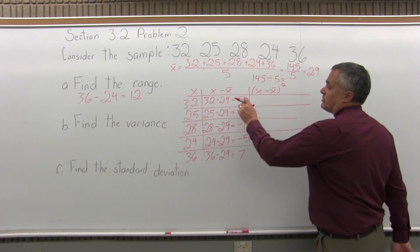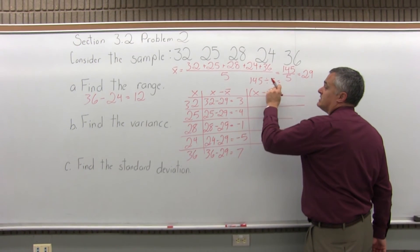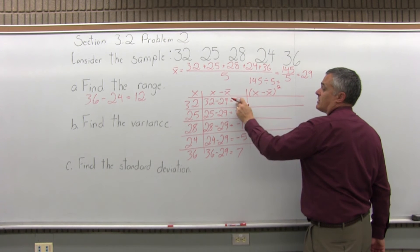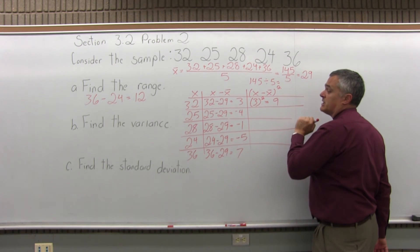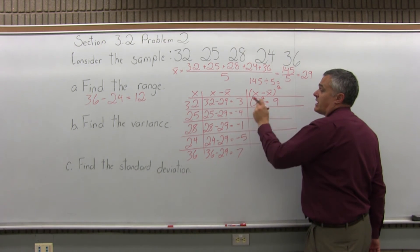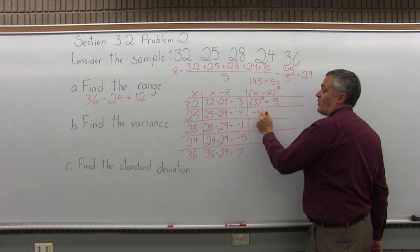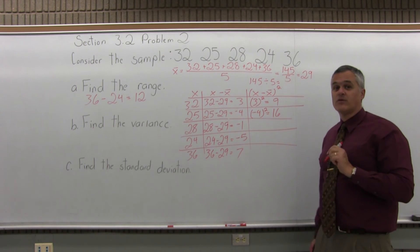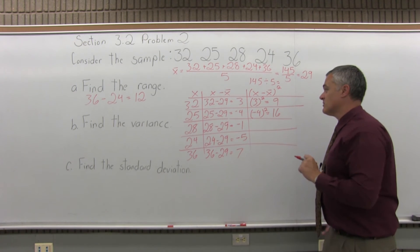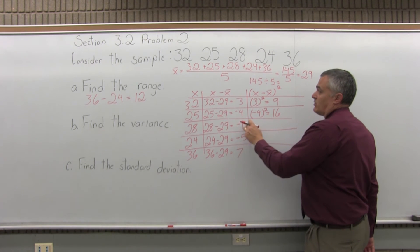Now what we're going to do is take the results of X minus X bar and raise each answer to the second power. In the top row, X minus X bar was 3. So, I have 3 second power, which is 3 times 3, which gives me a 9. The next row down, X minus X bar was negative 4. So, I'll do negative 4 second power. Negative 4 times negative 4, of course, is positive 16. You have to remember the negatives will cancel.